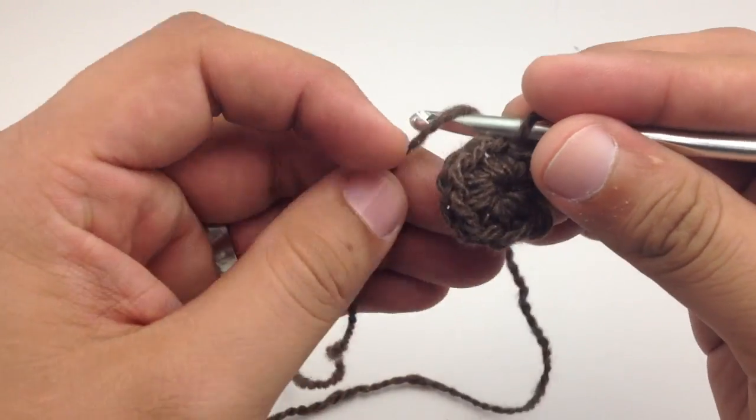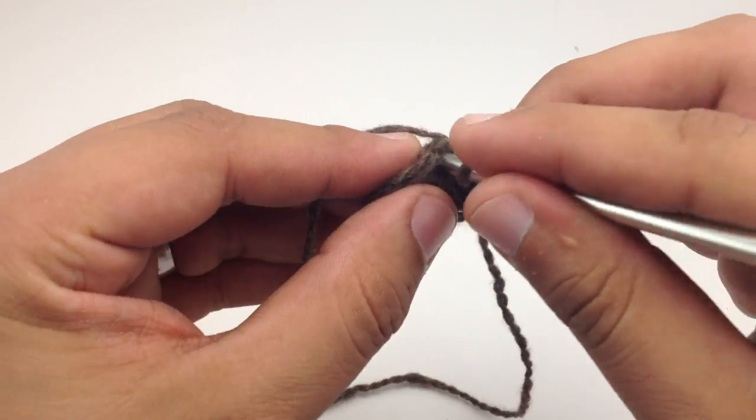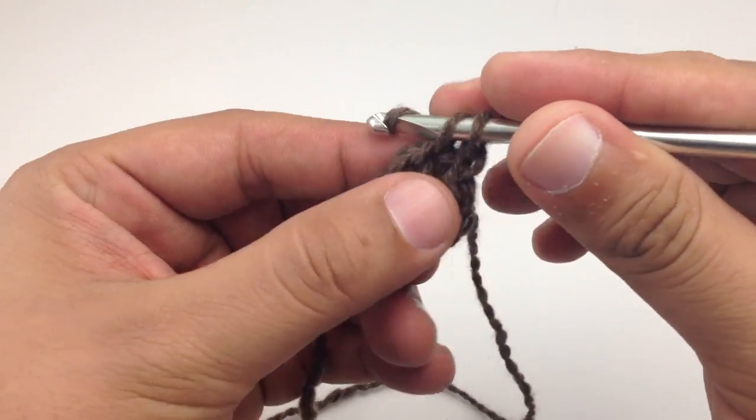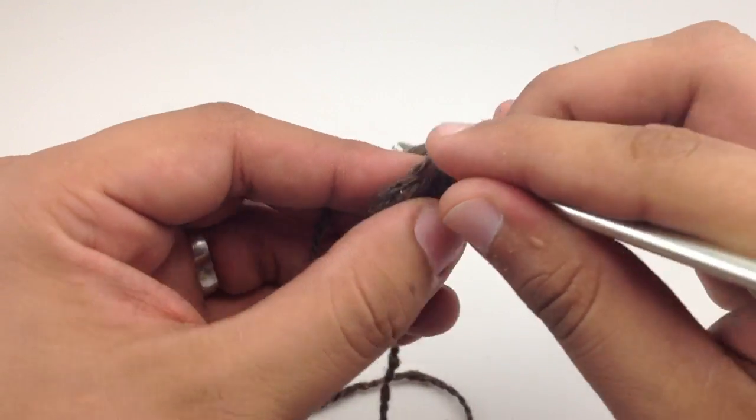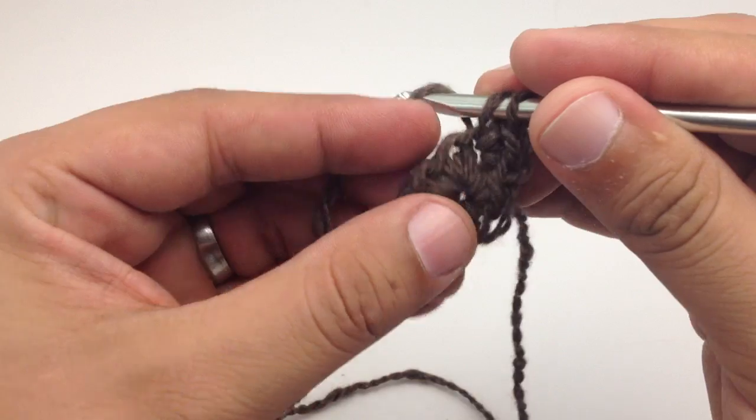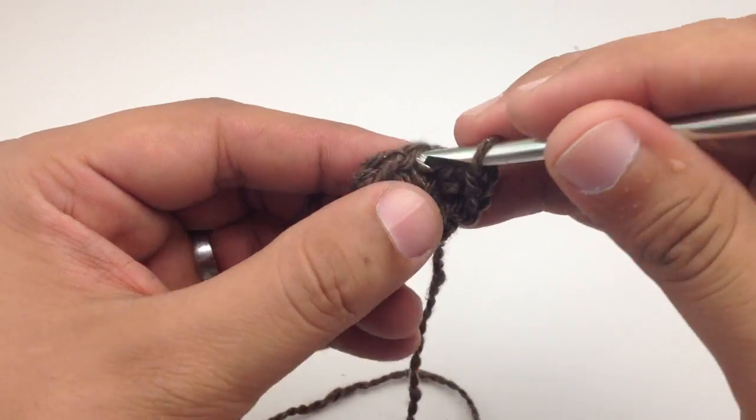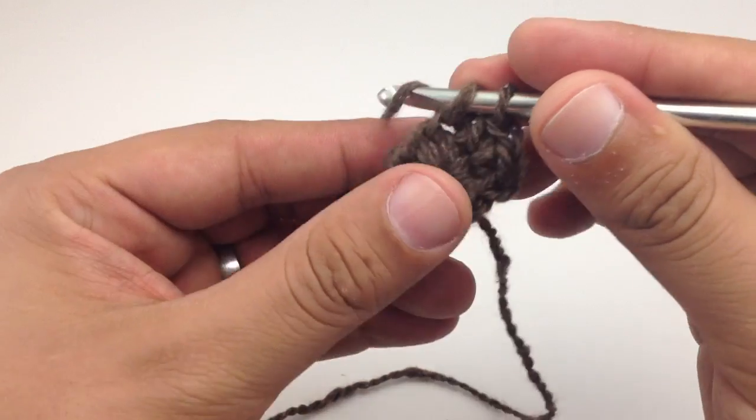And then you can just continue working along in the round as you normally would. And that's how we crochet the magic circle.